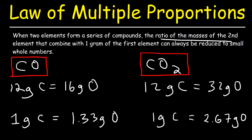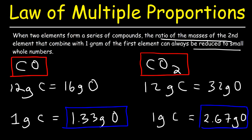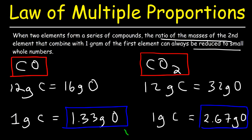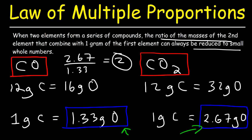The second element is oxygen, and that's how much oxygen is present if we have one gram of the first element. What is the ratio between these two numbers? If you take 2.67 and divide it by 1.33, this is going to be about 2.